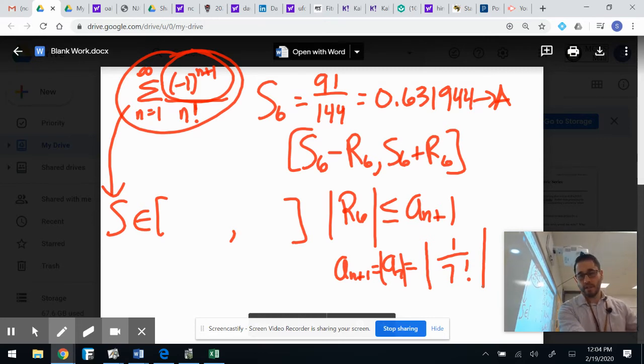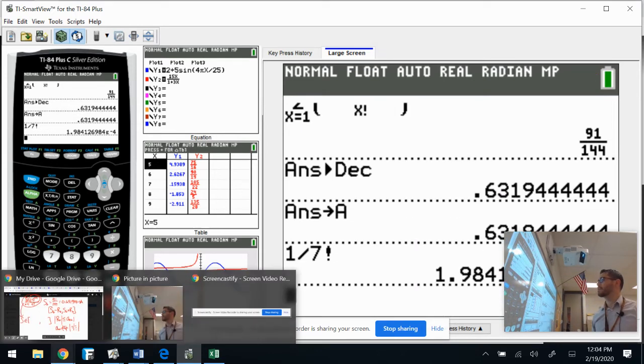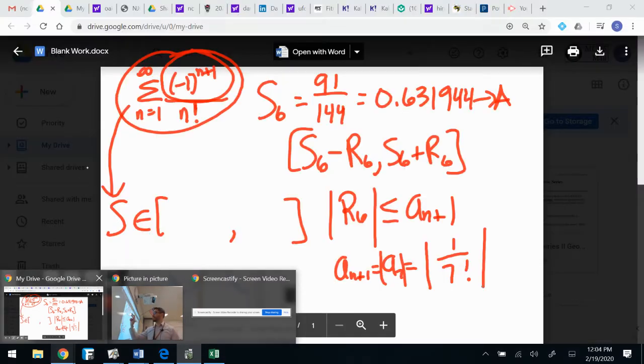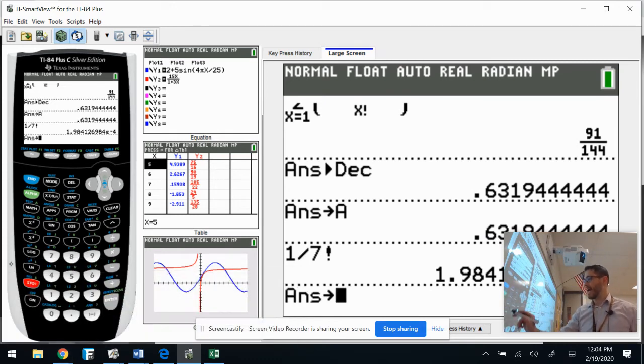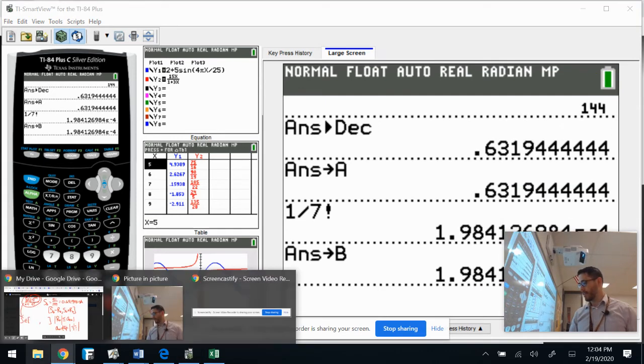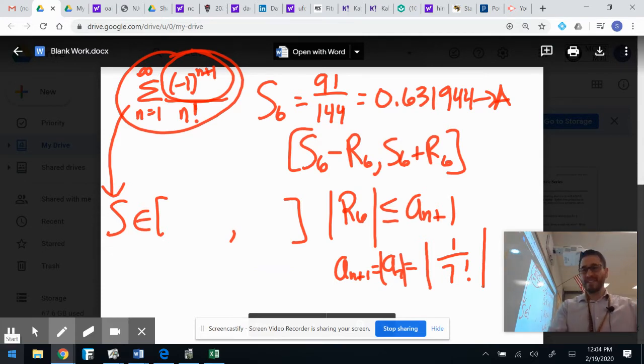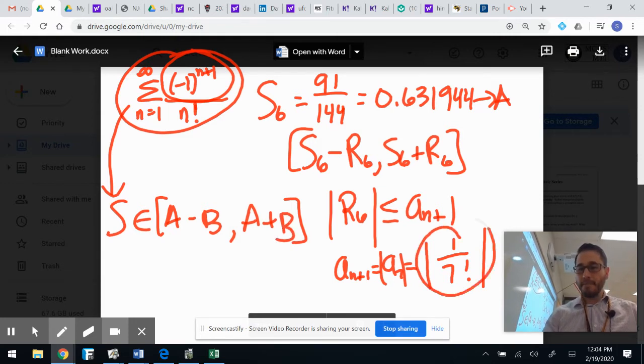So I can just go back to my calculator here. And let's find out what that would be. One divided by seven factorial. Let's see what this is. Alpha use number nine. That would be three zero. That'd be point zero zero zero one nine eight. I'm going to go ahead and store that guy in alpha B. So you guys go ahead and do that too. And then I'm going to go back to my screen here. So remember it's like point zero zero zero something. I stored it in B. So my answer here is simply going to be A minus B for my lower bound, A plus B for my upper bound. That is my maximum error.